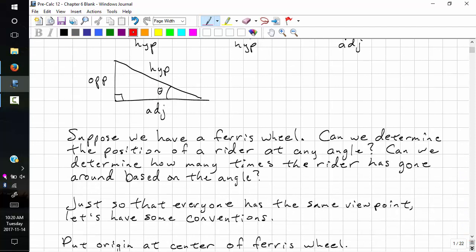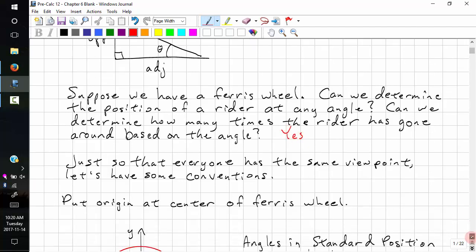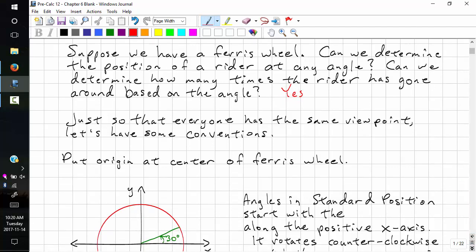What we're trying to solve is, suppose we have a Ferris wheel. Can we determine the position of a rider at any angle? Can we determine how many times the rider has gone around based on this angle? And the answer is yes. Just to let everyone have the same viewpoint, let's have some conventions.